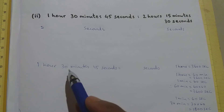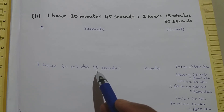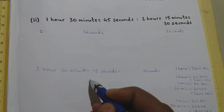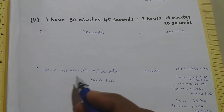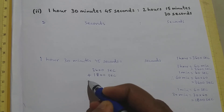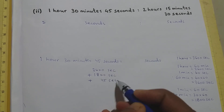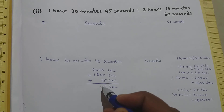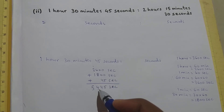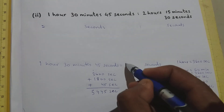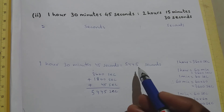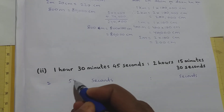We have converted 1 hour to 3600 seconds and 30 minutes to 1800 seconds, and then we add the 45 seconds. So 3600 + 1800 + 45 = 5445 seconds. So 1 hour 30 minutes 45 seconds is 5445 seconds.